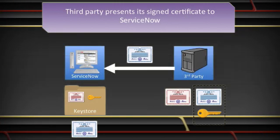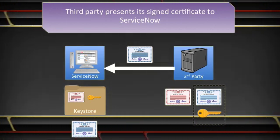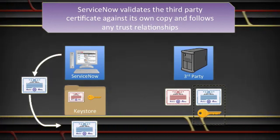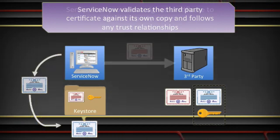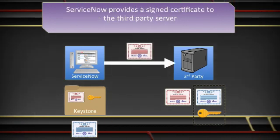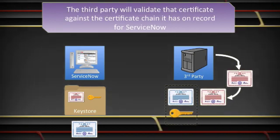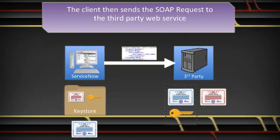When the third-party system receives the request, it will present its signed certificate to ServiceNow. ServiceNow will validate the third-party certificate against its own stored copy and validate any trust relationships associated with that certificate. Once validation is complete, ServiceNow will provide its own signed certificate to the third-party service. The third-party will similarly validate the certificate and any trust chains. When both systems are satisfied with the handshake, the typical SOAP exchange can occur.